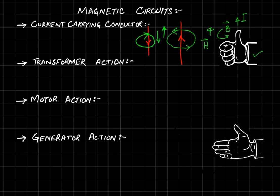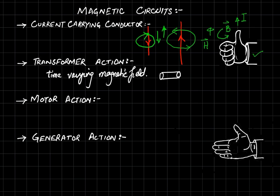Transformer action involves a time-varying magnetic field. This can be produced by a moving magnet, or another way is by having a core material with a wire wound around it, connected to a sinusoidal source. The sinusoidal source produces a time-varying voltage, so the current will be changing, and the field appearing on this side will again be a function of time — a sine or cosine waveform.